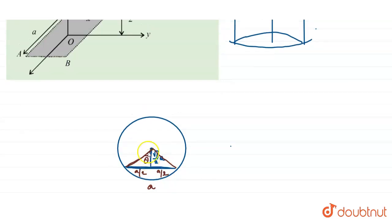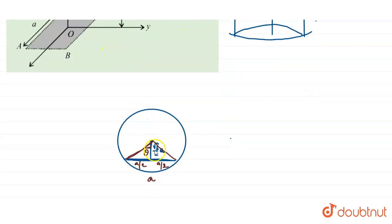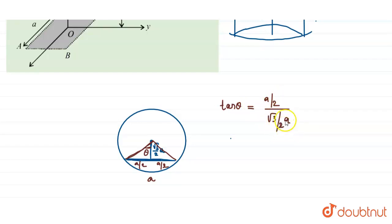We take the line charge distribution lambda and draw the cylindrical Gaussian surface. The rectangular slab has side length a and is at a distance root 3 by 2a. From this figure, tan theta equals (a/2) divided by (root 3 by 2a). Cancelling a and 2, we get 1 by root 3, so theta equals 30 degrees.